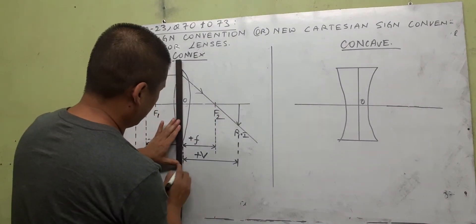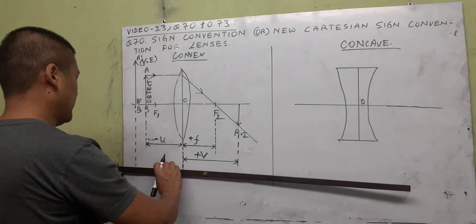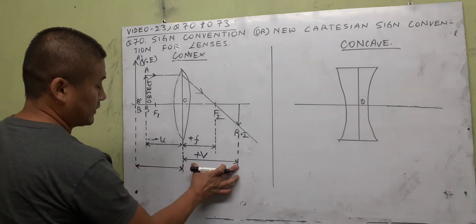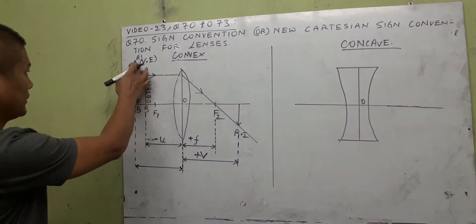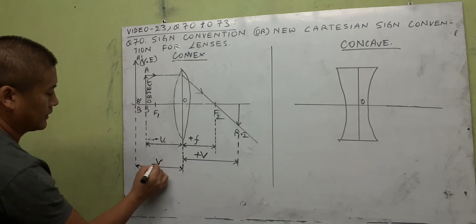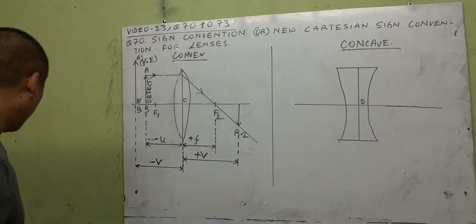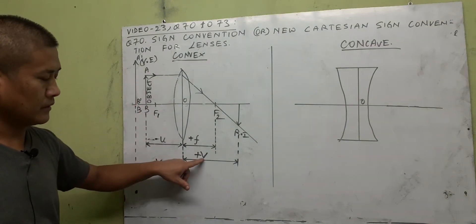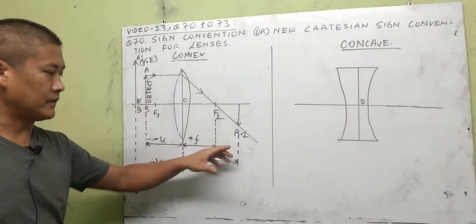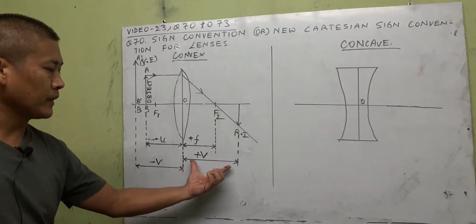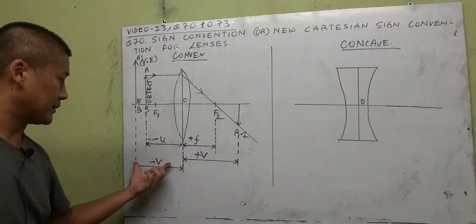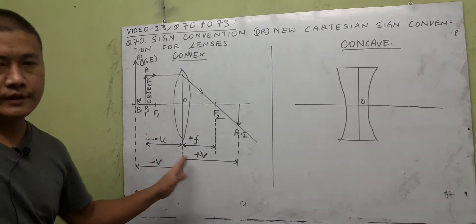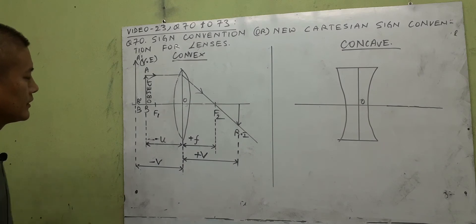There are two types of image distance possible: when the image is real and inverted it is on the right side, so v is plus; when the image is virtual and erect it is behind the object on the left, so v is minus. This is just opposite to mirrors — for mirrors, real inverted is on the left so v is minus, and virtual erect is behind the mirror on the right so v is plus. Don't get confused with that.